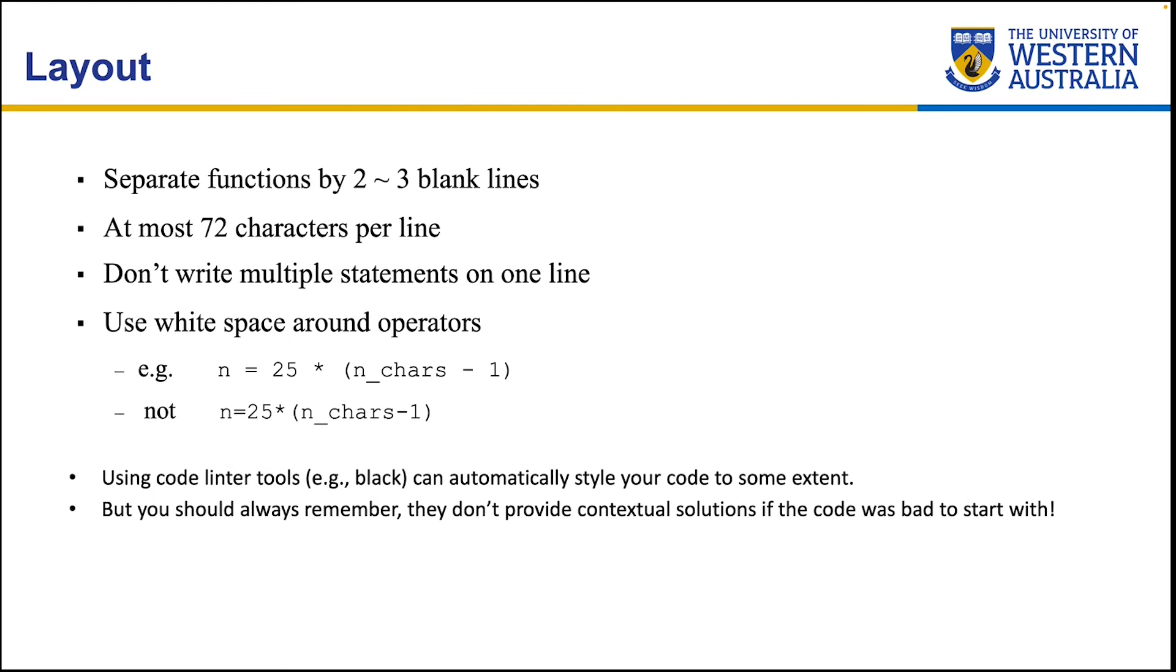We briefly talked about layouts, things like separate the functions by two or three blank lines. If the functions are right next to each other, it's sometimes difficult to see where the functions are, especially when you're scrolling through like hundreds of lines. And also, at most, like 72 characters per line—that's to fit all the code within the single line. Normally, you will find that you will not reach that. The comments, they can be over the lines, but it's better to have the comments on multiple lines so that it's narrower than those characters. It's all about presenting your code so that it's easier to read.